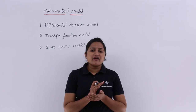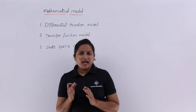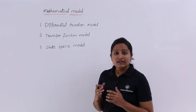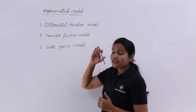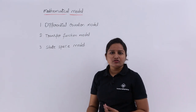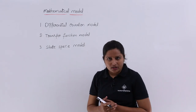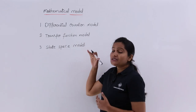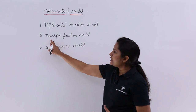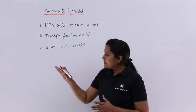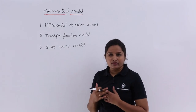In this video we are going to discuss mathematical models of control systems. We have three important representations of a control system: we can represent it in a differential equation model, a transfer function model or S-domain model, and a state space model. In this video we will discuss the differential equation model and the transfer function model. State space analysis is covered as a separate chapter in control systems.